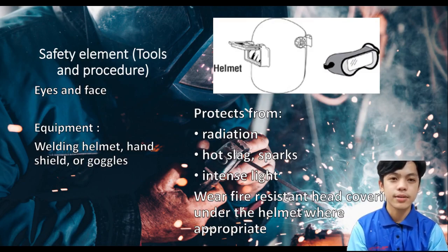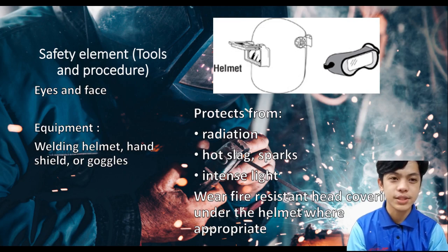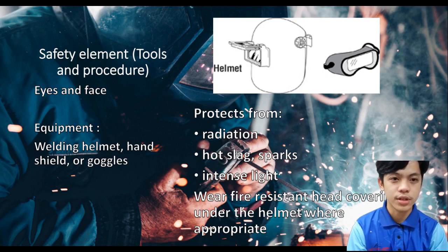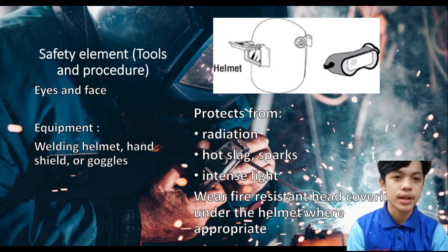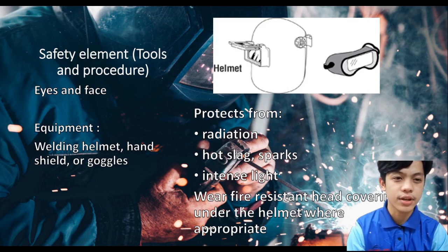I will present about safety elements. To protect eyes and face, we must use equipment such as a welding helmet, hand shield, or goggles. These protect us from radiation, hot slag, sparks, and intense light. Wear fire-resistant head covering under the helmet where appropriate.